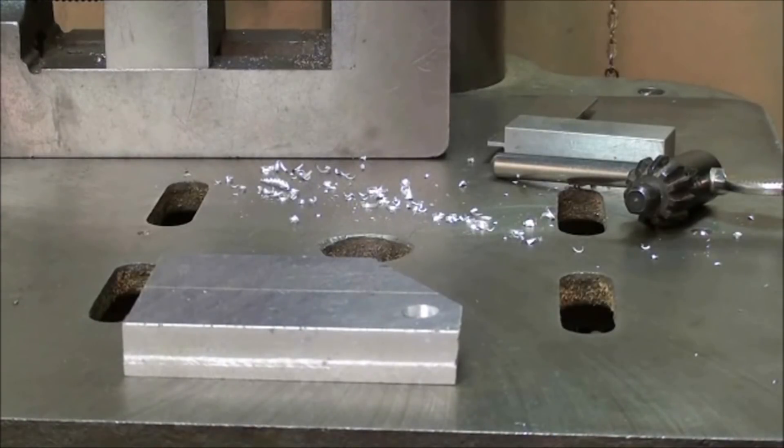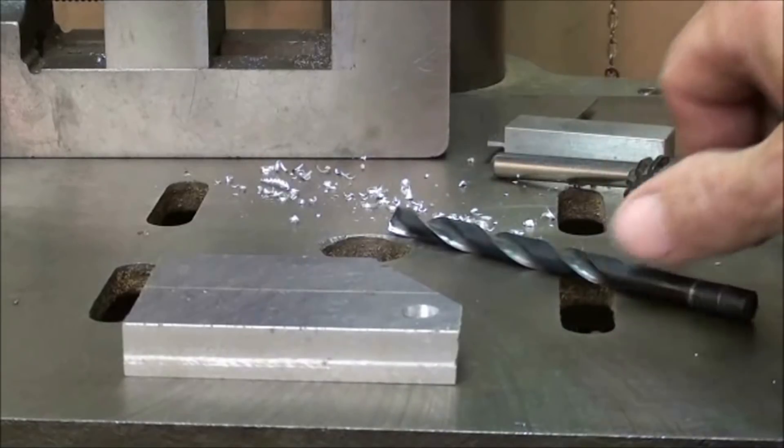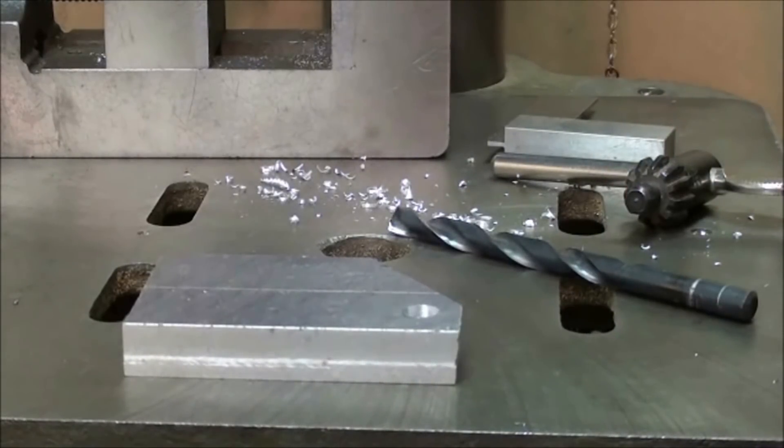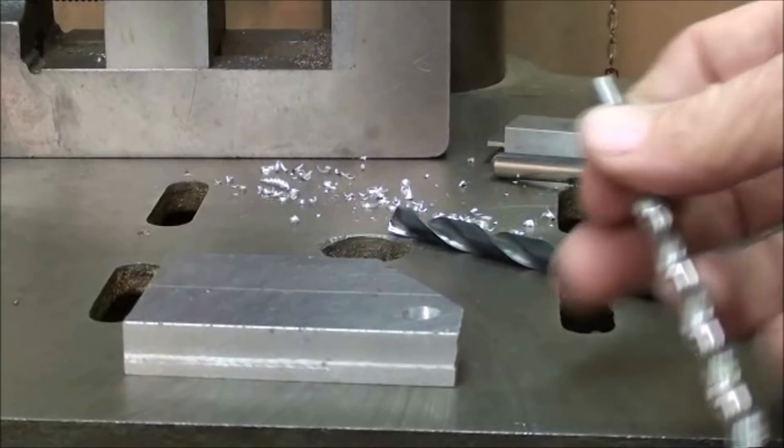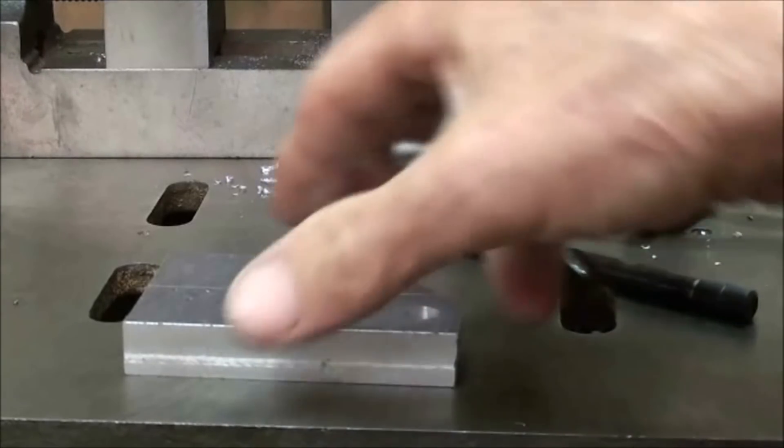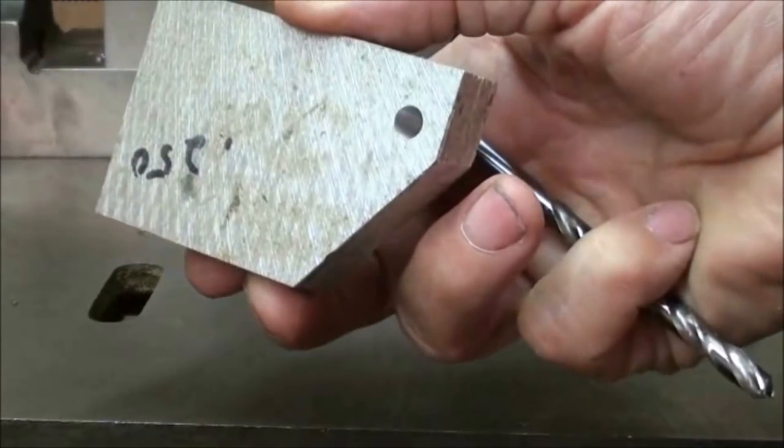This next method I'm going to call the counter boring method. I came across this myself over years of experience. I don't know if this is ever in any books or anything like that. But I'm going to tap this again, 5-16-18, and the tap drill size is quarter inch. So I've drilled quarter inch all the way through. This is aluminum.